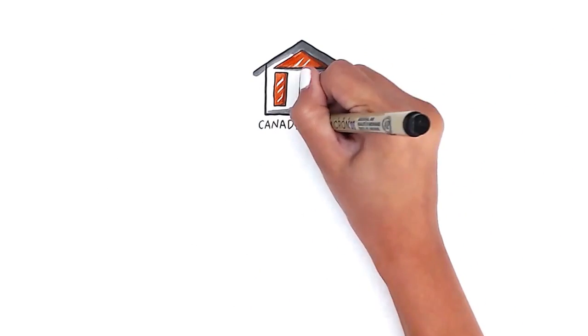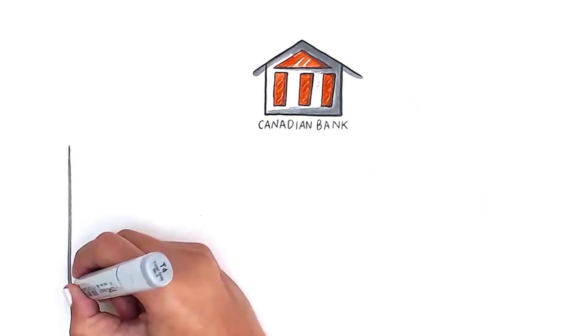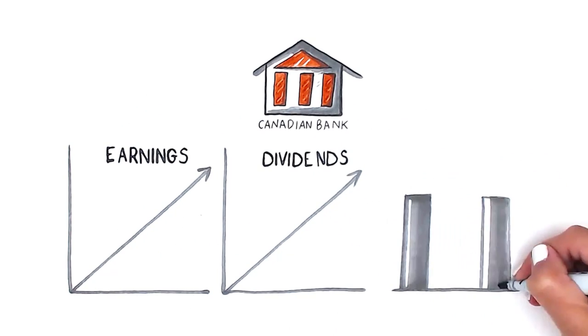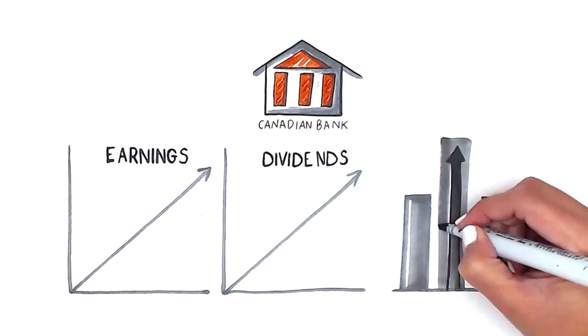Using our familiar Canadian bank example, we know that predictable and growing earnings create growing dividends, which result in higher share valuations and wealth.